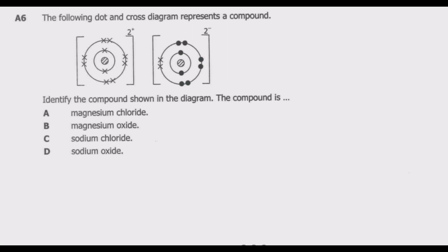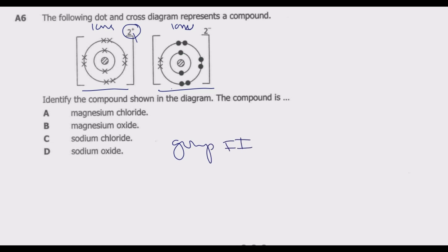Question A6: the following dot-and-cross diagram represents a compound — identify the compound shown. You need to look at these ions. This is a cation, which is positive, and this is an anion, which is negative. Because of this positive 2, this tells us the first element has donated 2 electrons to have a complete outer shell, meaning it is from group 2. This element has gained 2 electrons to fill the outermost shell.